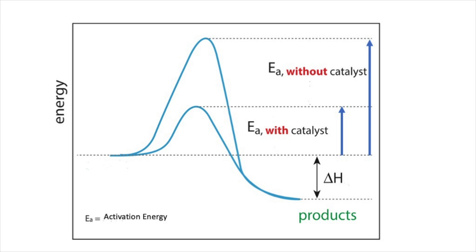A catalyst is a substance that speeds up the rate of a chemical reaction. It does this by making the reaction go by a different reaction pathway or mechanism that has a lower activation energy. Activation energy is the amount of energy required for a reaction to start. We can see in this slide that the activation energy is represented by Ea. With a catalyst, the activation energy is much smaller because the reaction goes by a different reaction pathway with a lower activation energy.